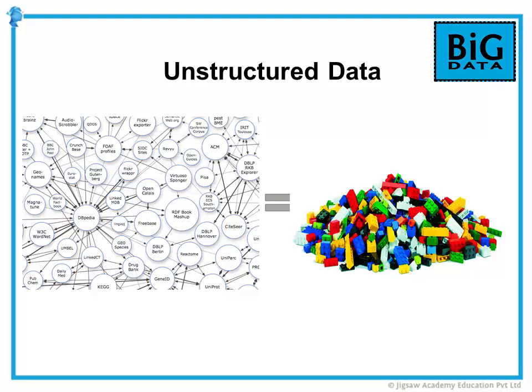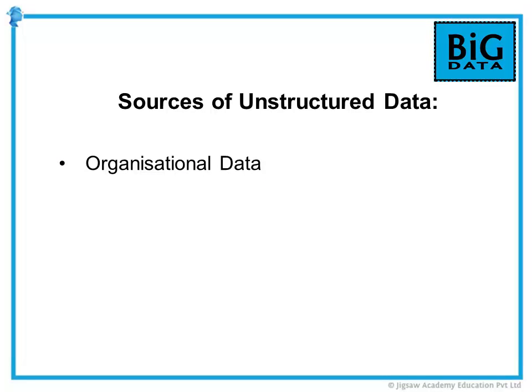Unstructured data is a set of data with a complex structure that might or might not have a repeating pattern. It typically consists of metadata, comprises inconsistent data, and includes data in different formats such as emails, text, audio, video, or image files. Sources for unstructured data include text internal to an organization — documents, logs, emails — as well as social media data and mobile data.